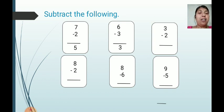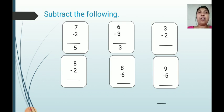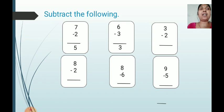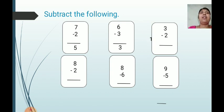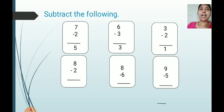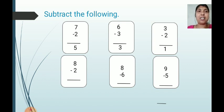Next example: 3 minus 2. Use the same method — start counting from the lower number and reach the upper number. Lower number is 2, upper number is 3. Start counting from 2: after 2 it is 3. Only one finger is raised. So the answer is 1. Write down 1. To summarize: start counting from the lower number till the upper number, count the fingers, and write the answer.